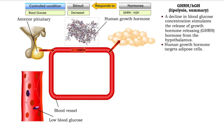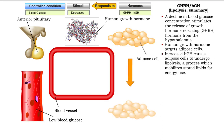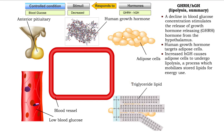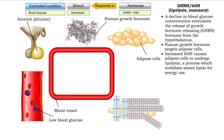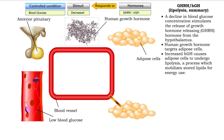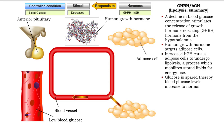Human growth hormone also targets adipose cells. HGH causes adipose cells to undergo lipolysis, a process which allows cells to use fats for energy instead of glucose. With cells using fat for fuel, blood glucose is spared so blood glucose concentration is returned to normal levels.